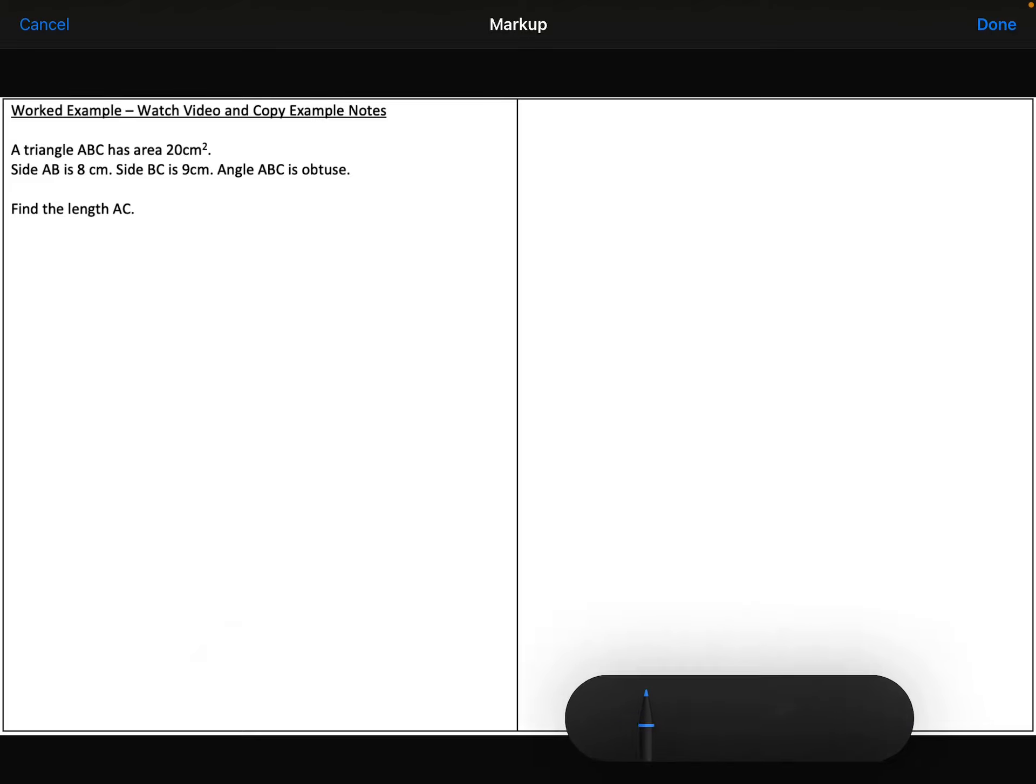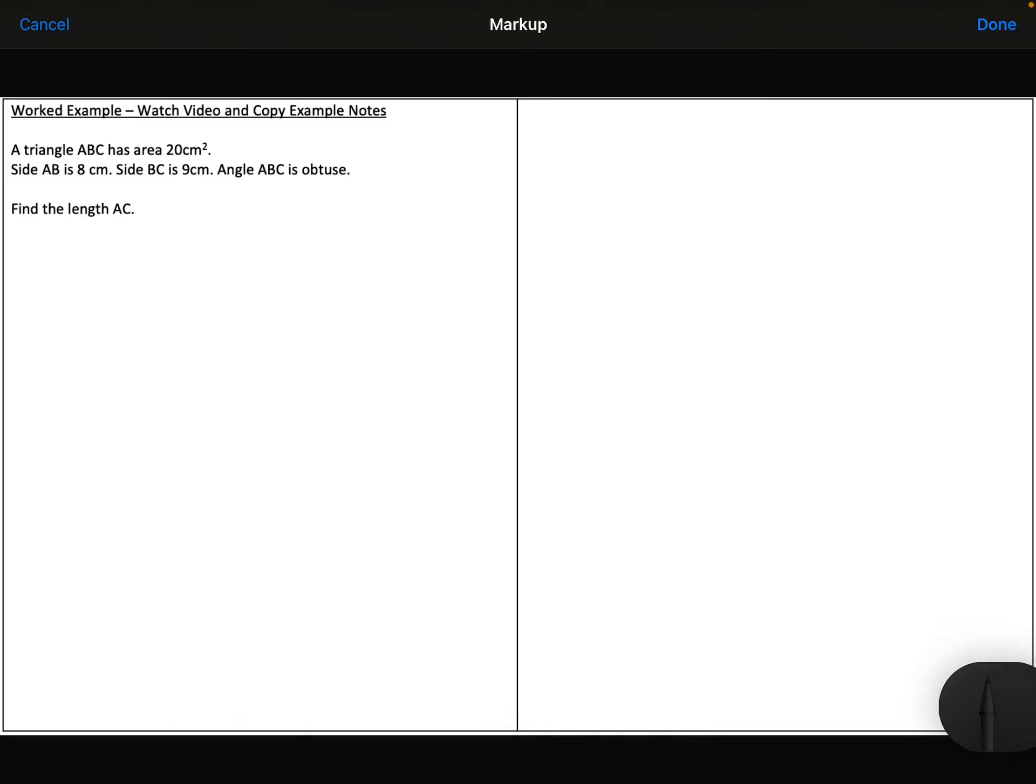Right, quite a lot of information there, so let me just draw that out so I can get a better idea of what's going on. So ABC is obtuse, so let's say ABC, there's my obtuse angle.